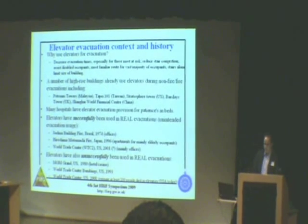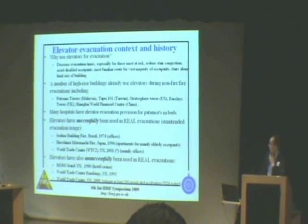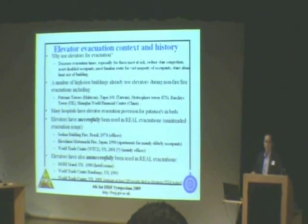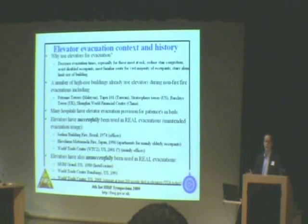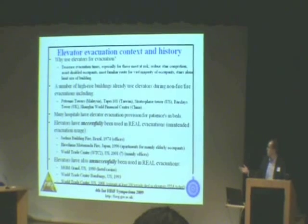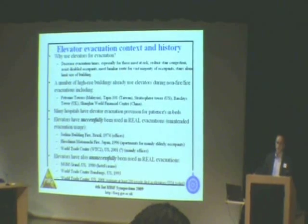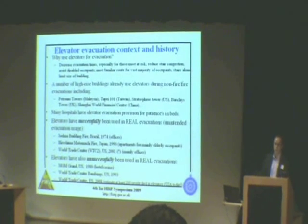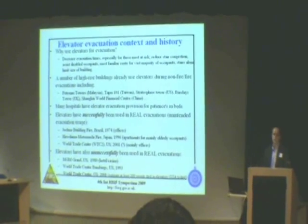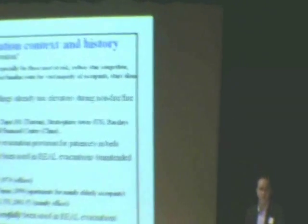Elevators have successfully been used during real evacuations — I've mentioned a few up here. I've put a question mark next to the World Trade Centre event, because we've heard that some 3,000 people evacuated in Tower 2 during the evacuation. What's interesting to remember is that a number of people evacuated using elevators without being told to evacuate, and I think it's important to remember this fact. In addition, elevators have caused harm in real evacuations, and it's really important that we remember this and learn from them.